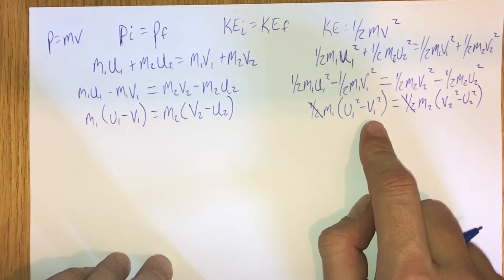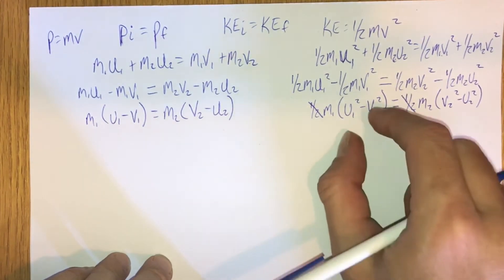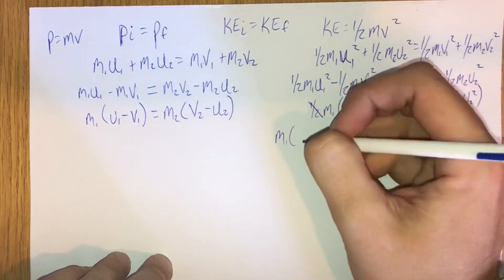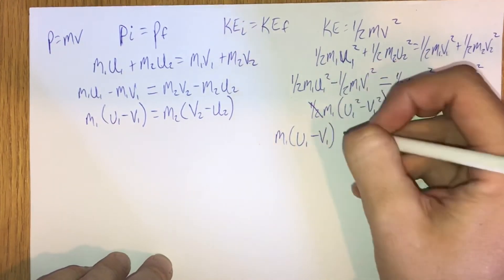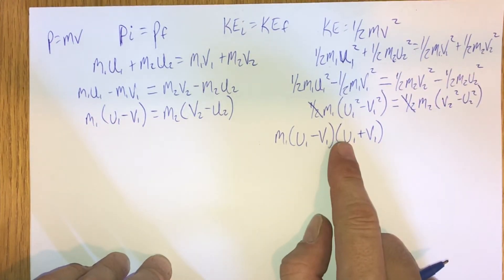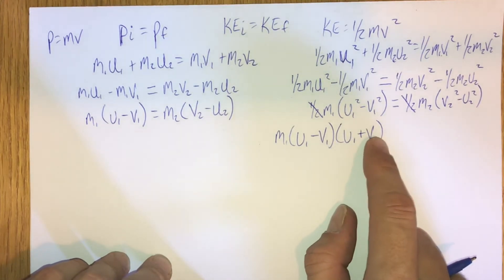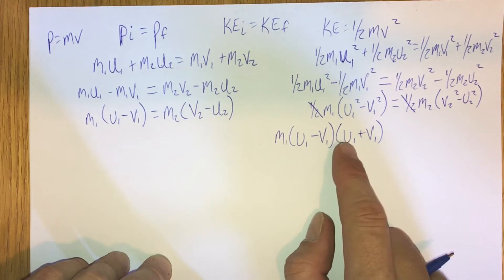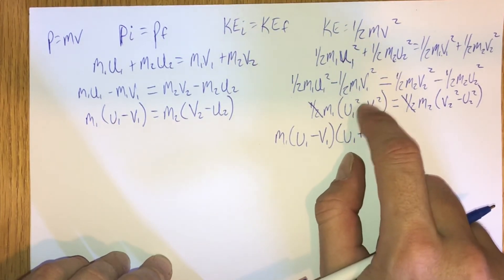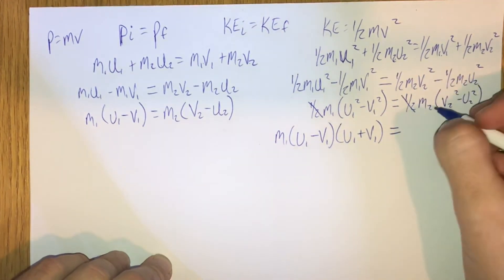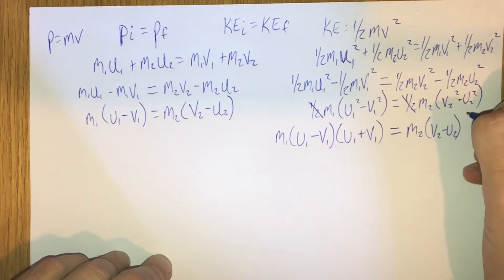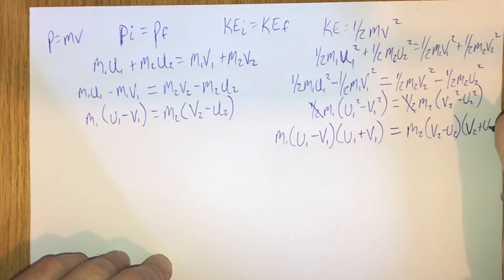We can expand this using the difference of two squares. So we write M1 times (U1 minus V1)(U1 plus V1) on the left — distributing confirms the middle terms cancel, giving back the squared terms. Likewise, on the right side we have M2 times (V2 minus U2)(V2 plus U2).